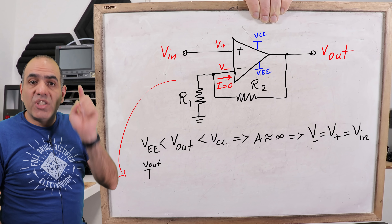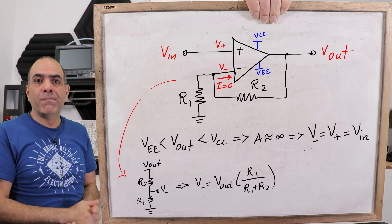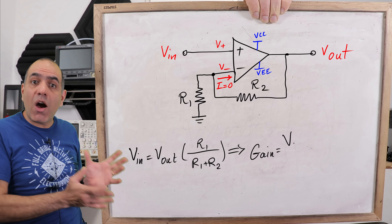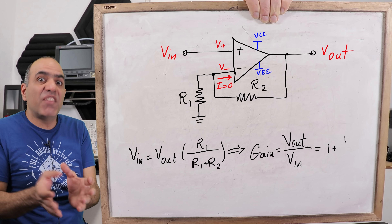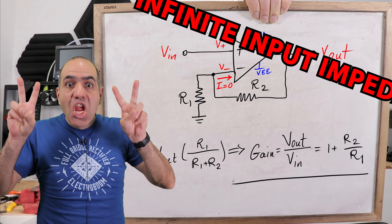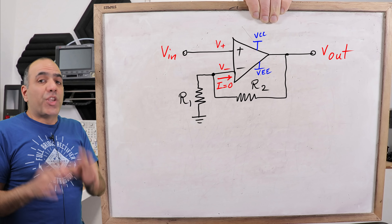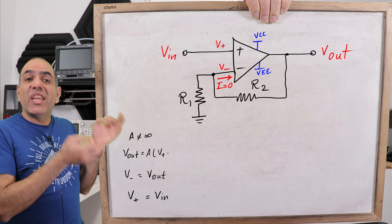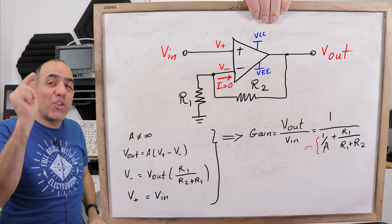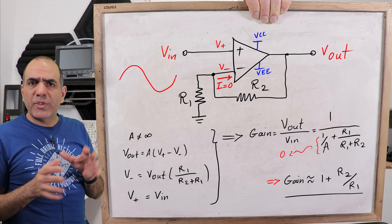Assuming the output voltage is within the power rails, it means the op-amp input voltages are virtually shorted, or V− equals V+, which is V-in. The op-amp doesn't draw input current and so doesn't affect the voltage divider — it's accurate enough. As I mentioned in my other video, a resistor divider splits the voltage across it proportionally. Rearranging the equations, we see the output equals the input amplified with a gain only related to resistor values. This is an infinite input impedance, zero distortion, non-inverting amplifier.